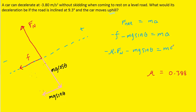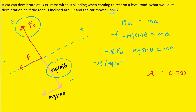In the y direction, the normal force points positive and mg cosine theta points negative. These cancel because the car is not accelerating in the y direction, so we can replace the normal force with mg cosine theta. Making that substitution in our equation, we see that mass appears in all three terms, so we can rewrite the equation without mass.